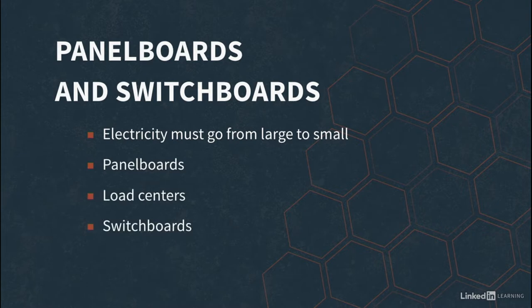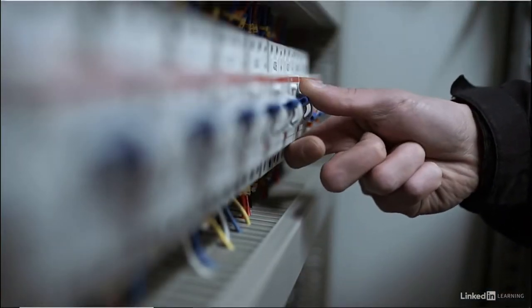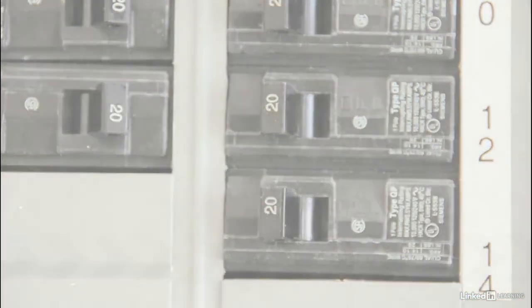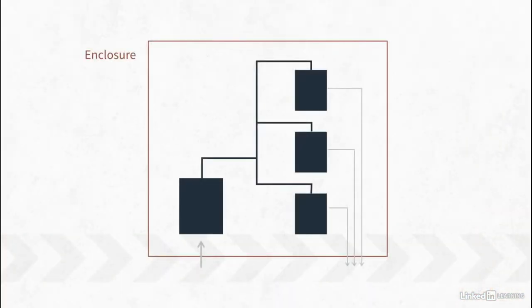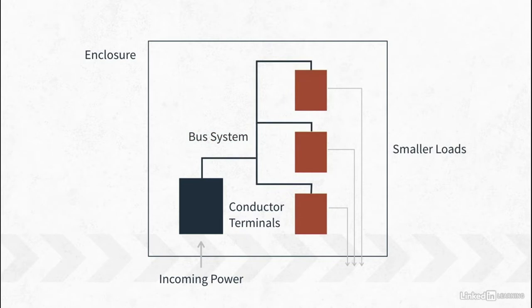These components are very similar in look and function, but have some variations that we will discuss. All three have an enclosure, an incoming power section including conductor terminals, and some sort of bus system, which is a solid piece of conductor, usually aluminum or copper, that distributes the power to the smaller loads.